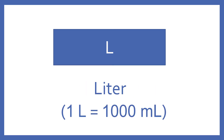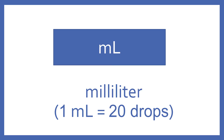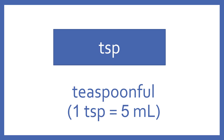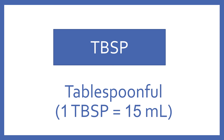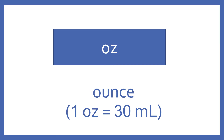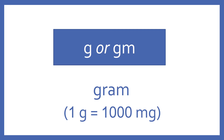L: liter — one liter equals 1,000 milliliters. ML: milliliter — one milliliter equals 20 drops. TSP: teaspoonful — one teaspoonful equals 5 milliliters. TBSP: tablespoonful — one tablespoonful equals 15 milliliters. OZ: ounce — one ounce equals 30 milliliters. G or GM: gram — one gram equals 1,000 milligrams.